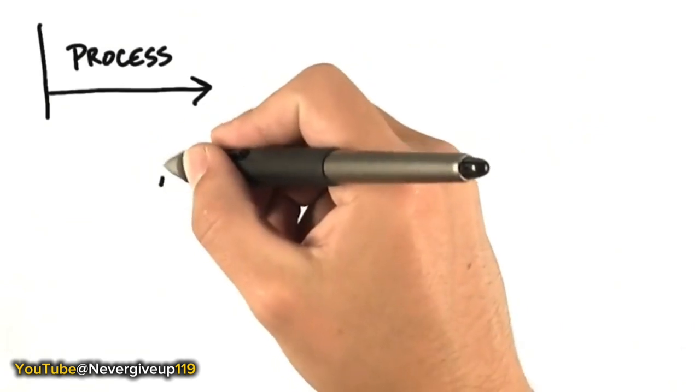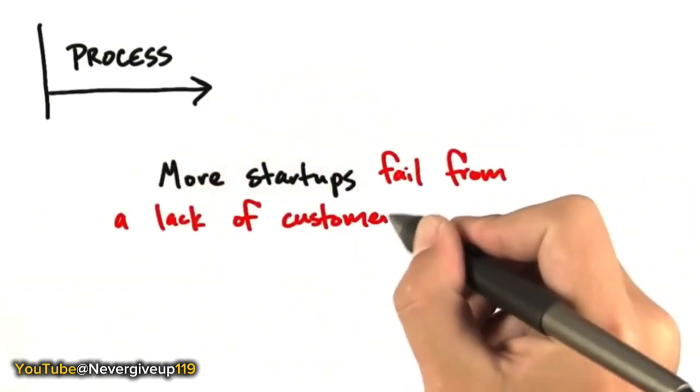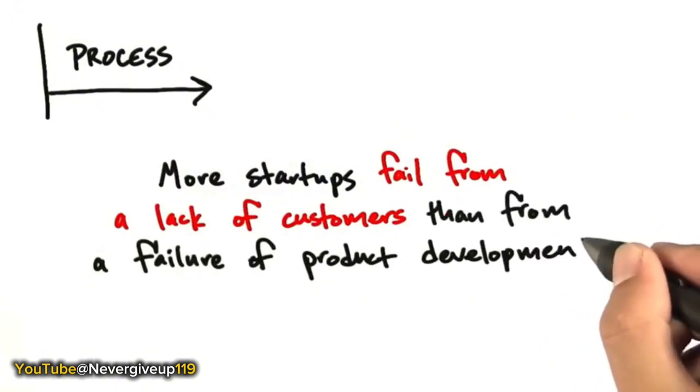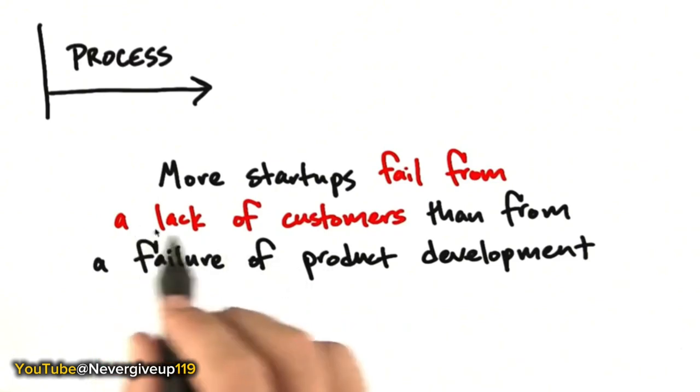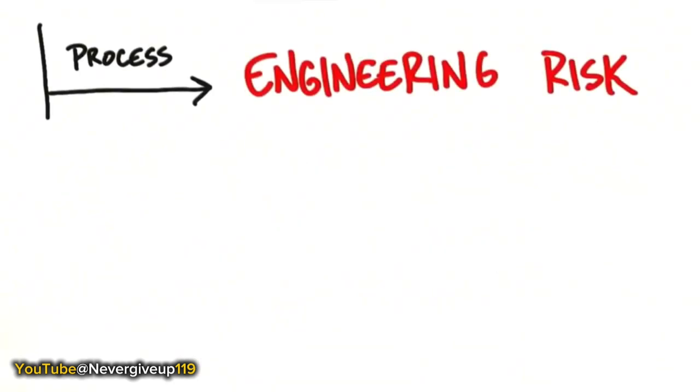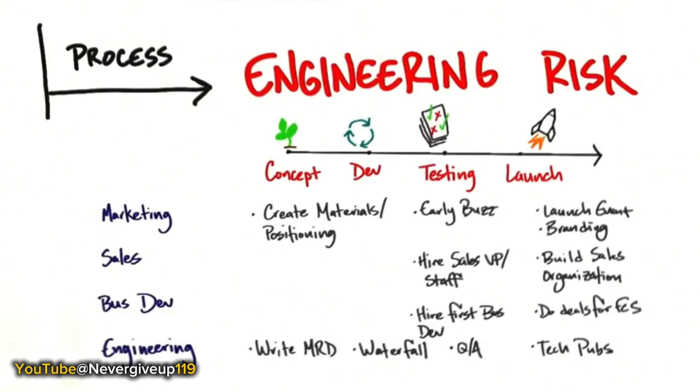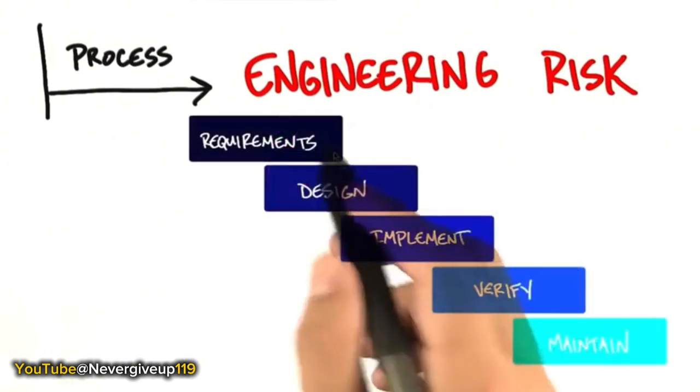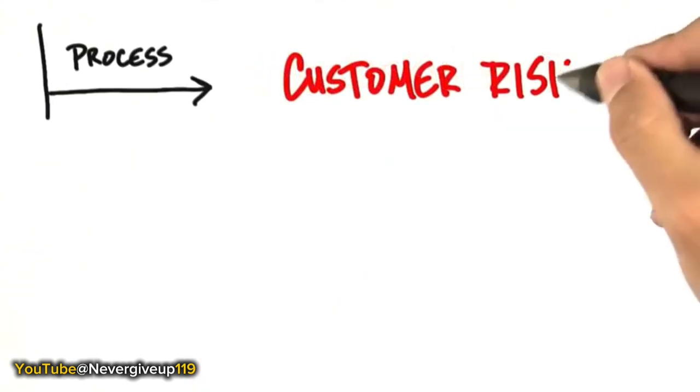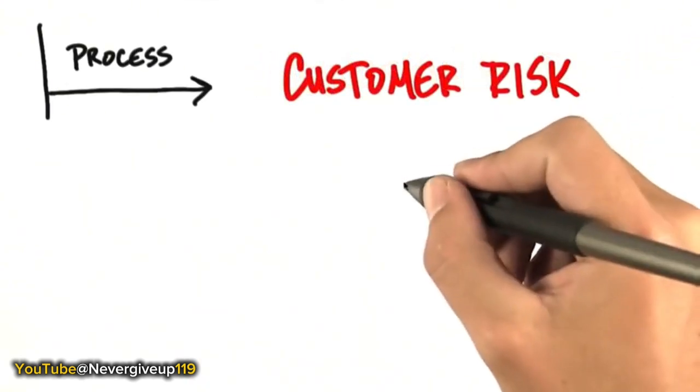What we now know is most startups fail from a lack of customers than from a failure of product development. And that's really interesting. Even in Silicon Valley, where we probably take more technical risk per square inch than anywhere else in the world, we go out of business typically not because we didn't deliver a product. We go out of business because we didn't find enough customers to pay us enough money. That's a big idea because we have all these processes to manage the engineering process. That is the biggest risk in a large company, but we had no processes to manage the customer risk.